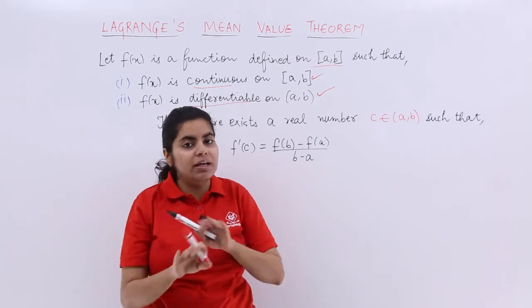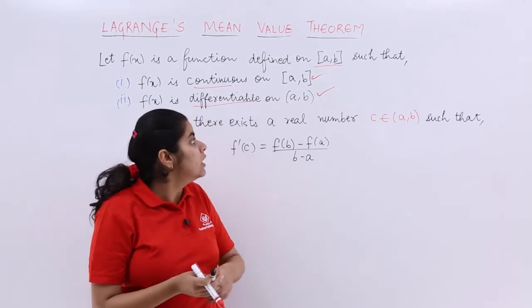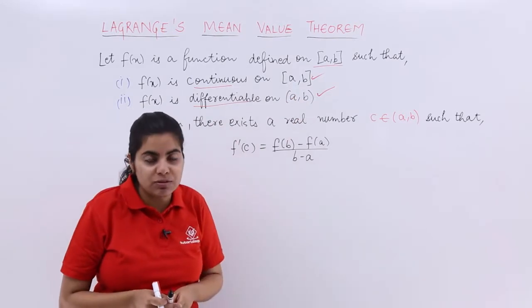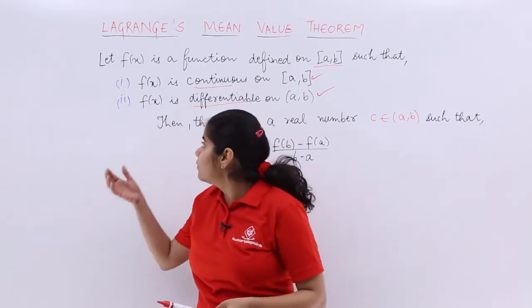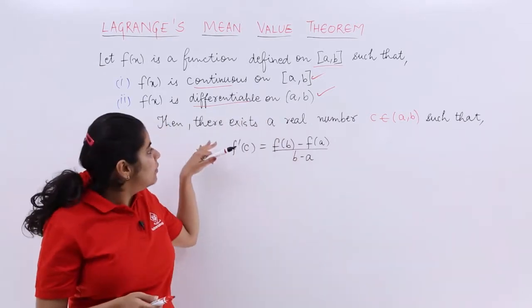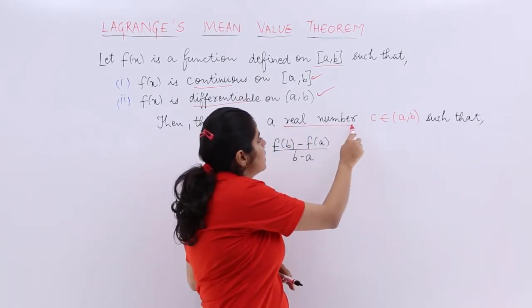But in the case of Lagrange's Mean Value Theorem, there is no such third condition. If these two conditions are satisfied, then according to Lagrange's Mean Value Theorem, there will exist a real number c